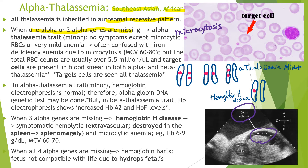When one or two alpha genes are missing, it is called alpha-thalassemia trait or alpha-thalassemia minor. They have no symptoms except microcytic RBCs or very mild anemia, often confused with iron deficiency anemia due to microcytosis with MCV around 60–80. The RBC counts are usually over 5.5 million, and target cells are present on the blood smear in both alpha and beta thalassemia. Target cells are the hallmark of thalassemia, seen in all kinds — alpha, beta, minor, trait, and major.